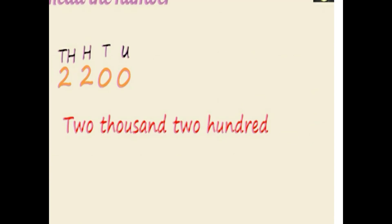Second example: 2, 2, 0, 0. What is the place of two? Thousand place. What is the place of two? Hundred place. What is the place of zero? Tens place. What is the place of zero? Unit place. See how to read: two thousand two hundred.